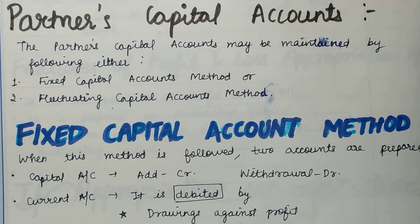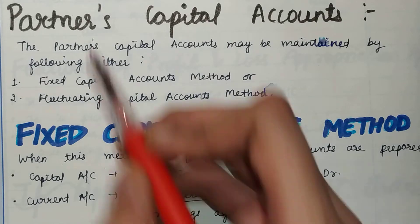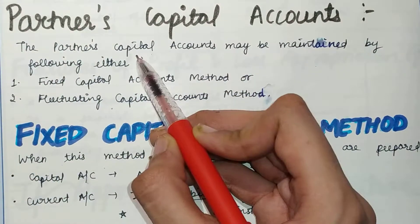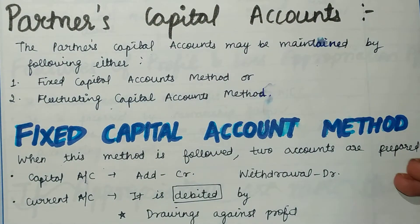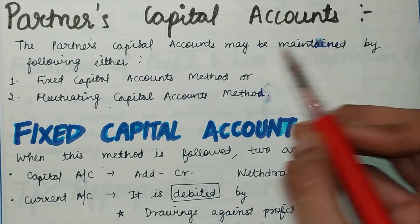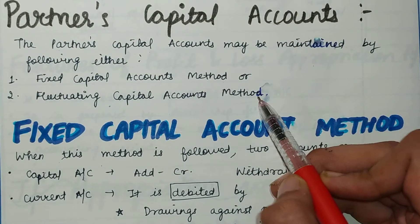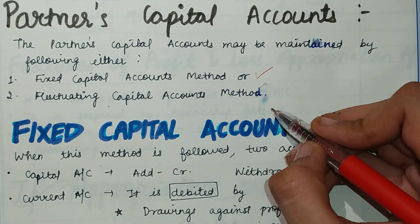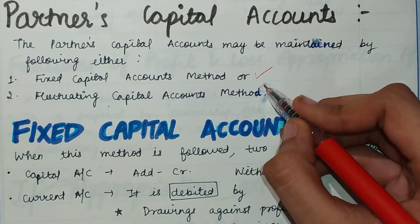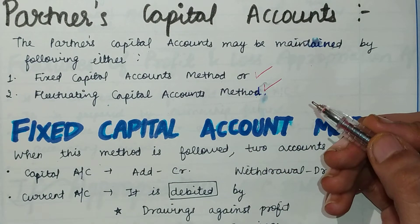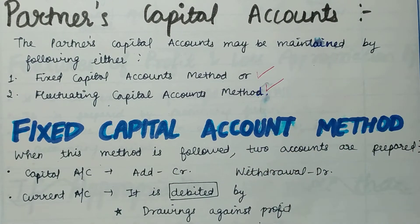For example, if there are three partners A, B, and C, then we will prepare three capital accounts — one for A, one for B, and one for C. Now, when preparing capital accounts, there are two methods: the fixed capital account method and the fluctuating capital account method.